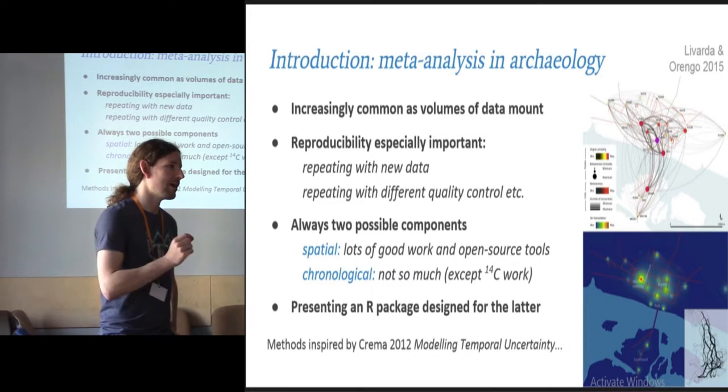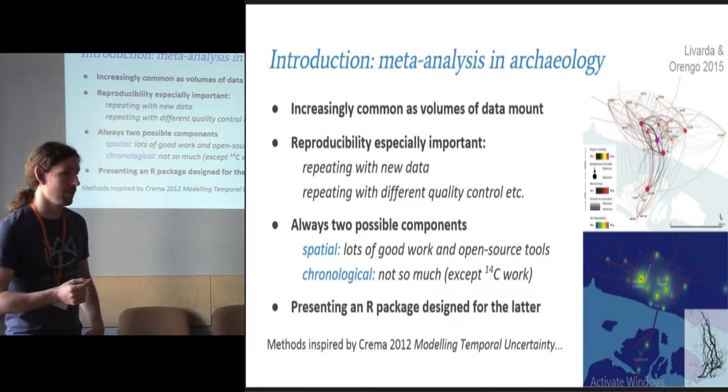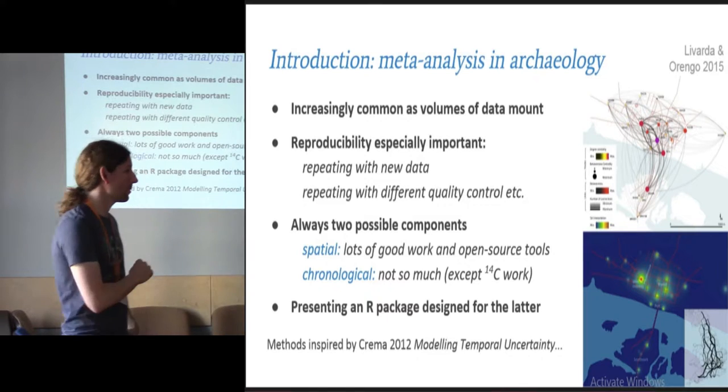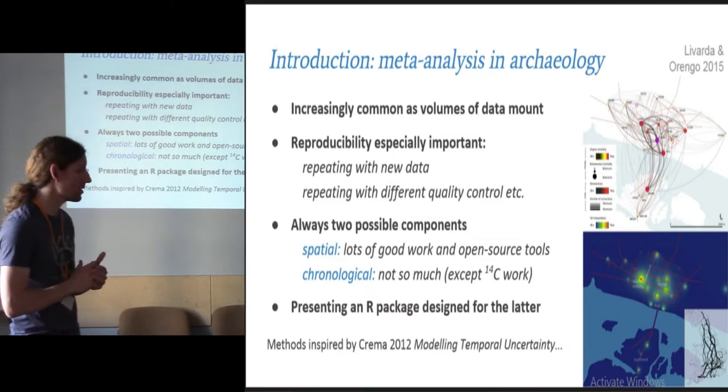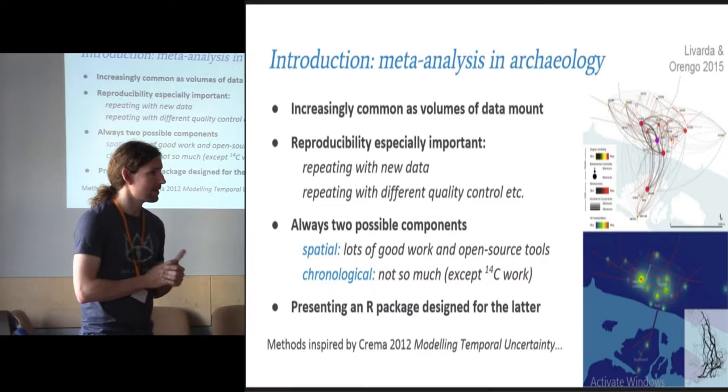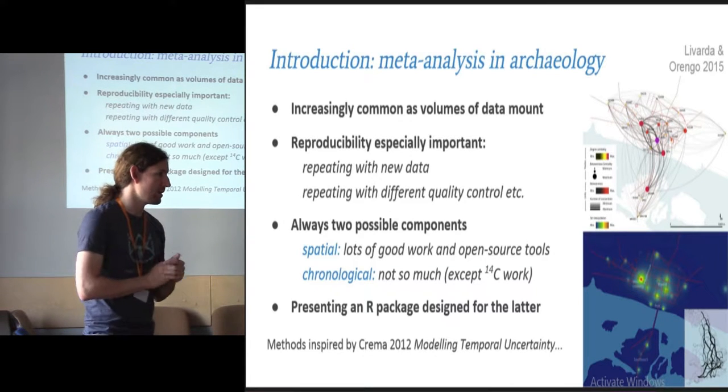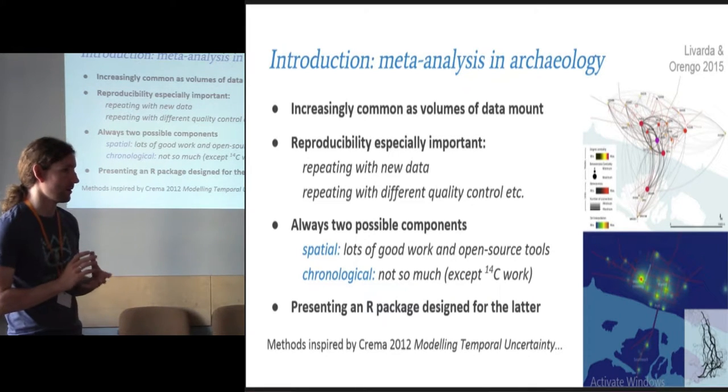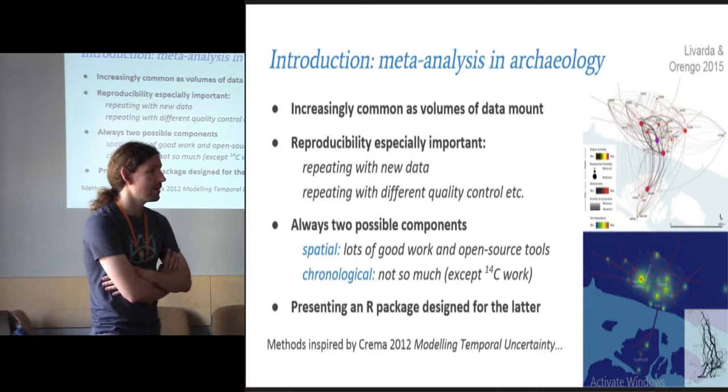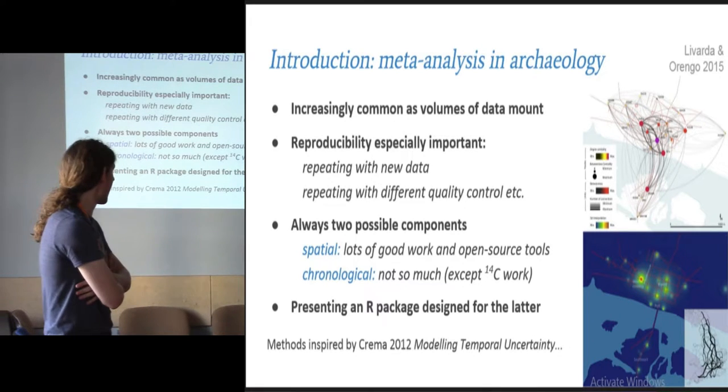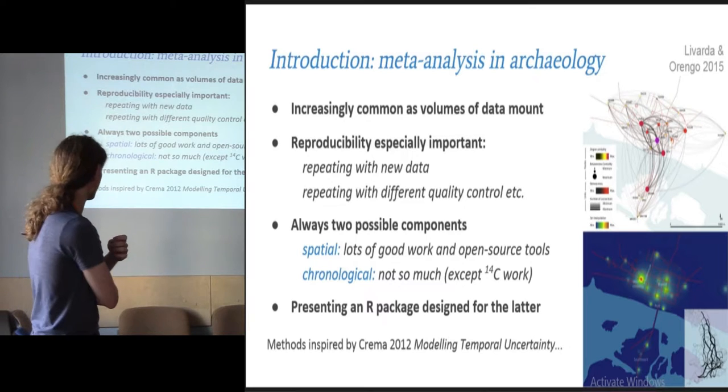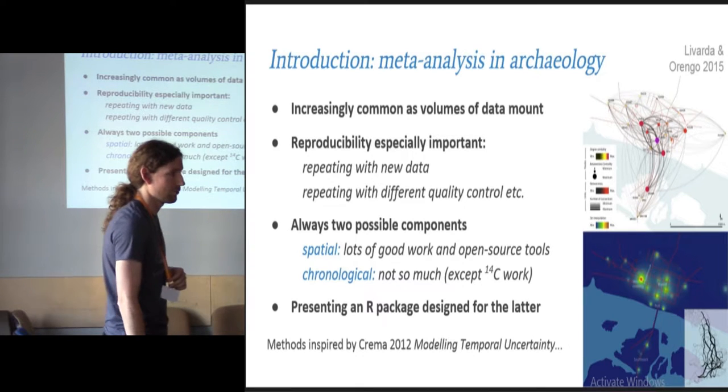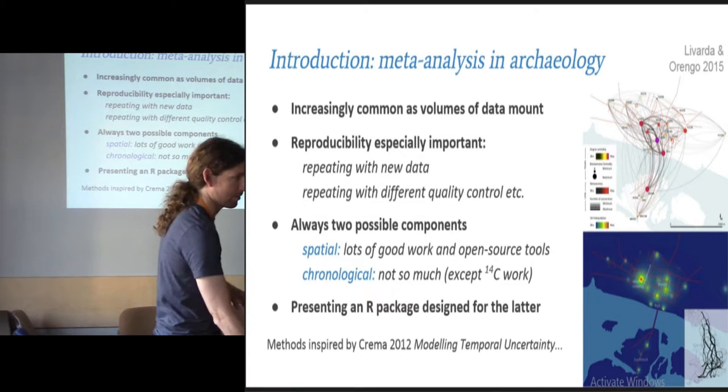There's an awful lot less done on how we deal with chronology. We saw some very interesting tools yesterday, the Periodo tool. But when it comes to actually doing the analysis rather than scaling the data, talking to each other in the first place, there's very little work on how we actually deal with chronological uncertainty outside of the explicit radiocarbon literature. When dealing with any other form of data, things tend to get done on a rather ad hoc basis. So I designed an R package for dealing with that problem. The methods here are entirely inspired or ripped off from Enrico Crema, so there's a little plug there for the paper that gave me the ideas.